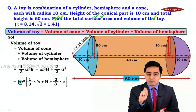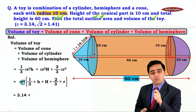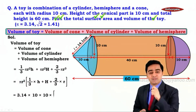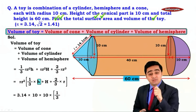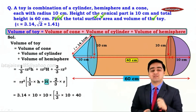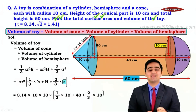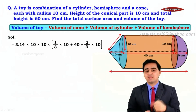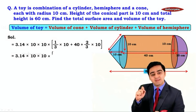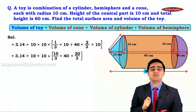Now let us substitute the values. In place of π we write 3.14. The radius is 10, so we write 10 × 10. Inside the bracket: 1/3 × h, where the height of the cone is 10 centimeters, giving 10/3. Capital H, the height of the cylinder, is 40 centimeters. Then 2/3 × r, where the radius is again 10, giving 20/3. So inside the brackets we have 10/3 + 40 + 20/3.